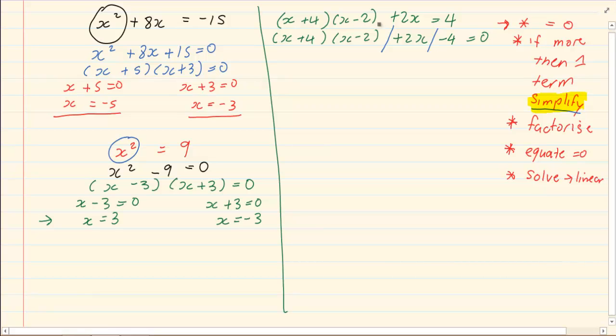So, in the first term, we are going to use FOIL to get rid of the brackets. We are going to end up with x squared plus 2x minus 8. Then we have plus 2x minus 4 is equal to 0.